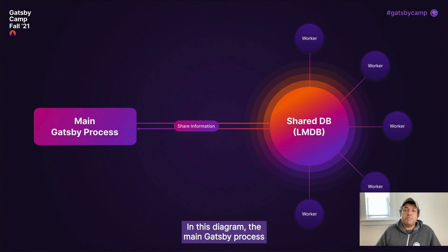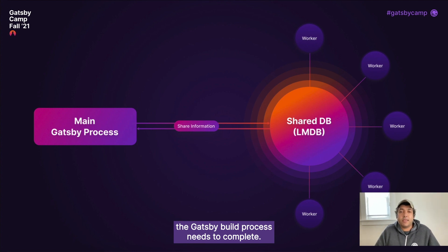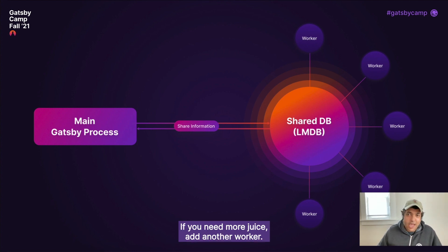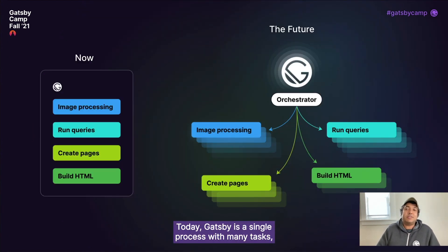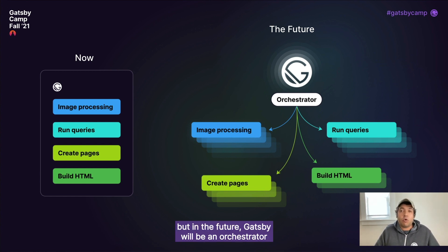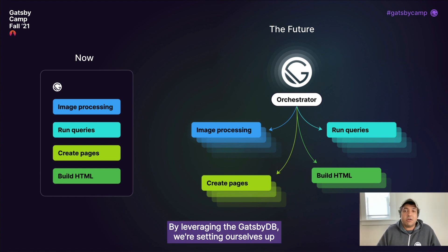In this diagram, the main Gatsby process shares information with the Gatsby DB. We can then have workers reading and writing to this data store to accomplish tasks the Gatsby build process needs to complete. If you need more juice, add another worker. Today, Gatsby is a single process with many tasks, but in the future, Gatsby will be an orchestrator managing a pool of tasks specific to workers that can parallelize work. This will allow us to scale horizontally, setting ourselves up for a future of reduced build times across the stack.